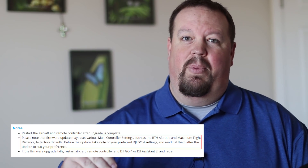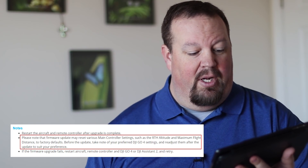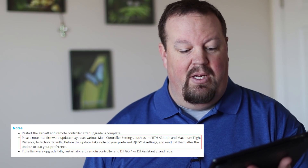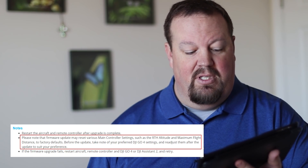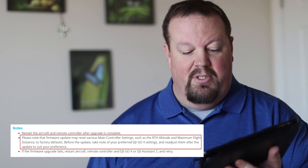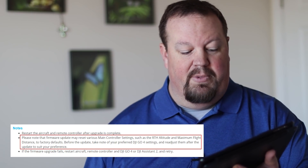There is one thing to keep in mind. They have a note at the bottom of the release notes: please note the firmware update may reset various main controller settings, such as the RTH altitude and maximum flight distance, to factory defaults. Before the update, take note of your preferred DJI Go 4 settings and readjust them after the update. So go through your settings before you do the firmware upgrade, write them down, and reapply them after you update your Mavic Pro.